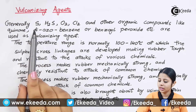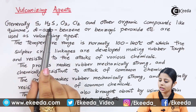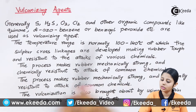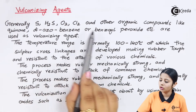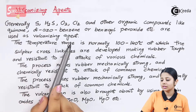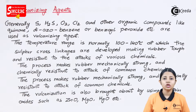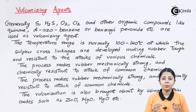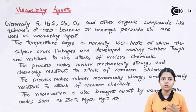Vulcanizing agents generally include S, H2S, O2, Cl2, and other organic compounds like quinone, diazobenzene, or benzoyl peroxide. The process of vulcanization started only with sulfur. We used to take rubber, mix it with sulfur, and let the properties of sulfur get into the rubber and make sure that the properties of rubber are increased or enhanced.